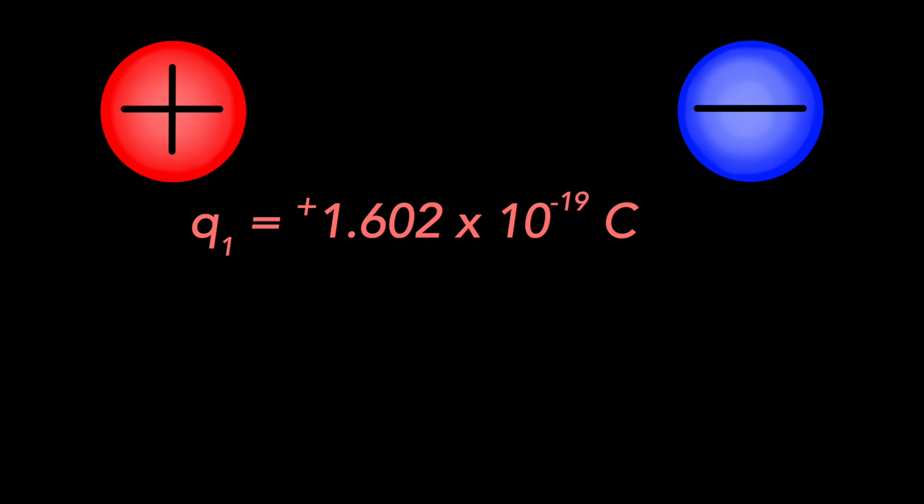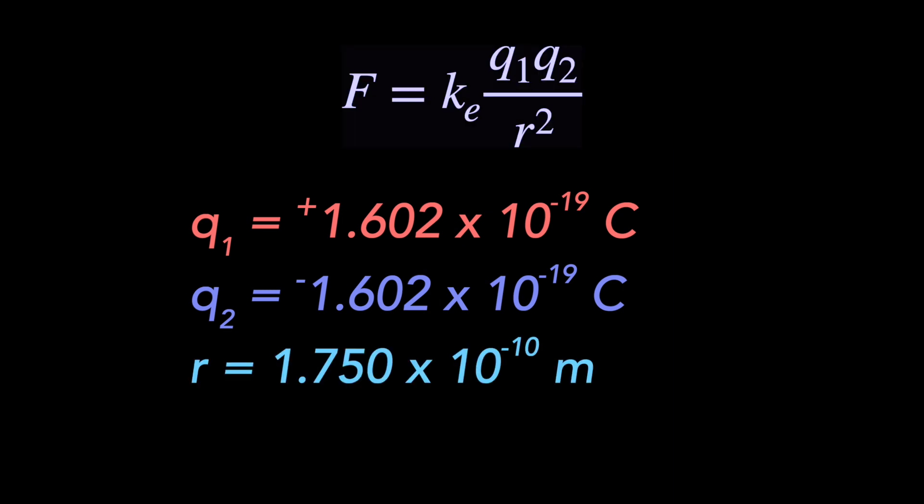A proton carries a positive charge, and an electron carries a negative charge with the same magnitude. Let's suppose they are this distance apart. Can you work through this calculation on your own? Pause the video while you give it a try.